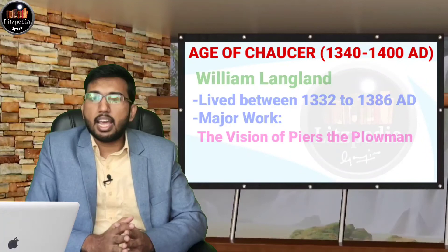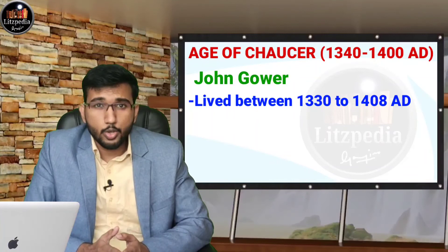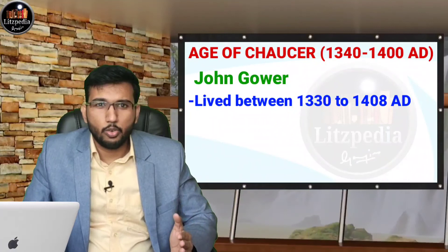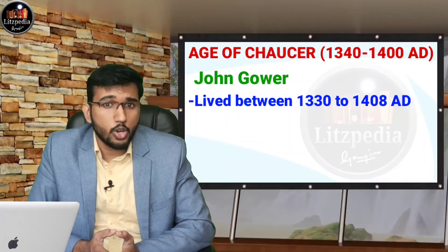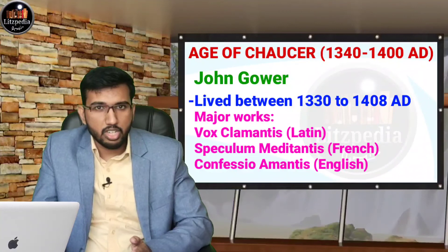Next is John Gower, who lived between 1332 and 1408. Three major works of John Gower we need to know: Vox Clamantis, written in Latin; Speculum Meditantis, written in French; and Confessio Amantis, written in English.